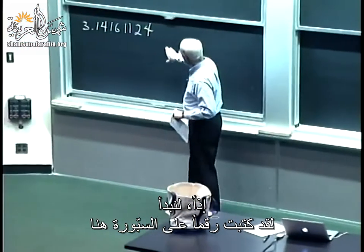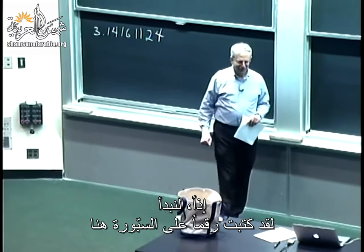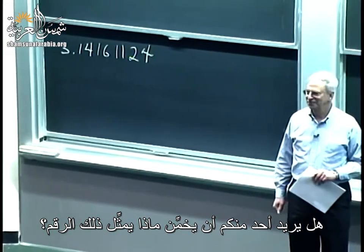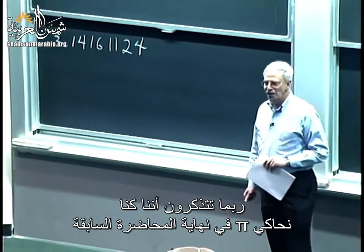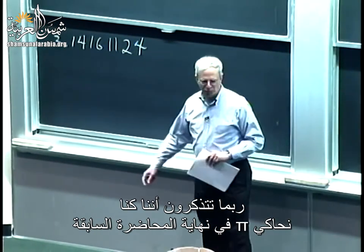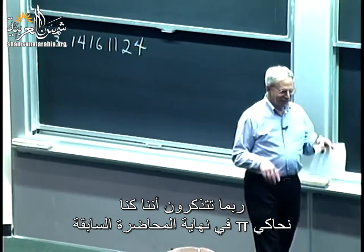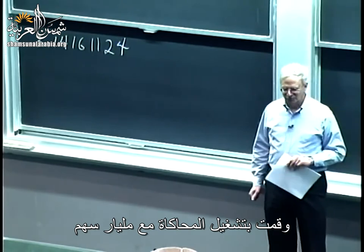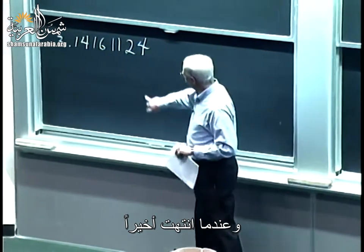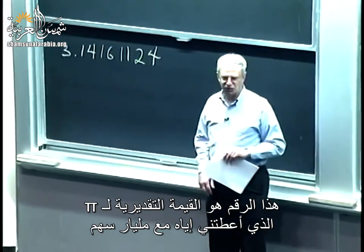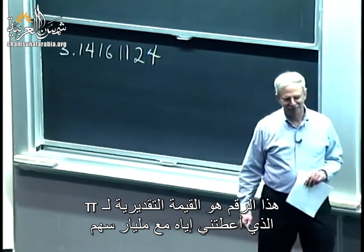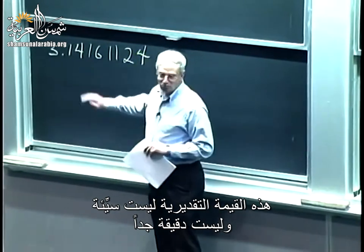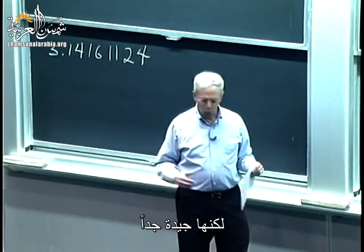So let's start. I have a number written on the board here. Anyone want to speculate what that number represents? You may recall at the end of the last lecture, we were simulating pi, and I started it running with a billion darts. When it finally terminated, this was the estimate of pi it gave me — with a billion. Not bad, not quite perfect, but still pretty good.